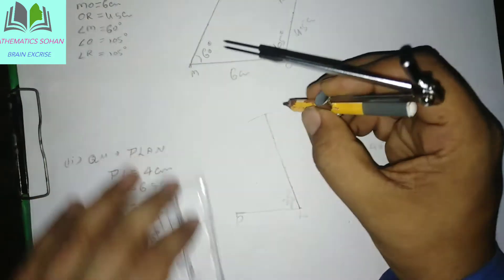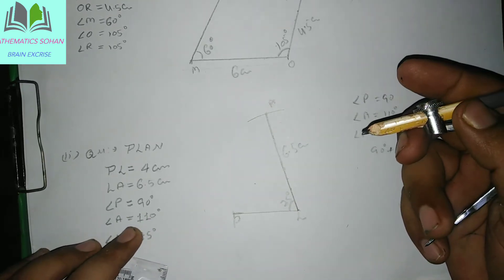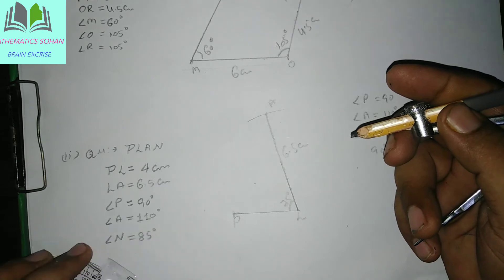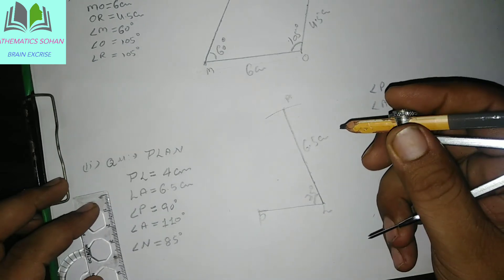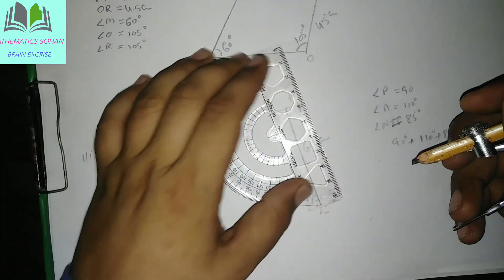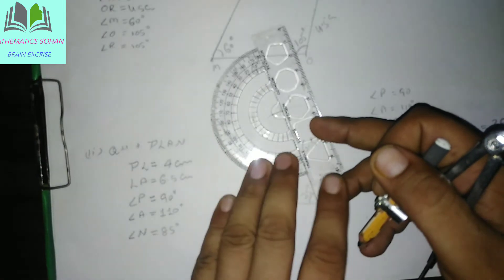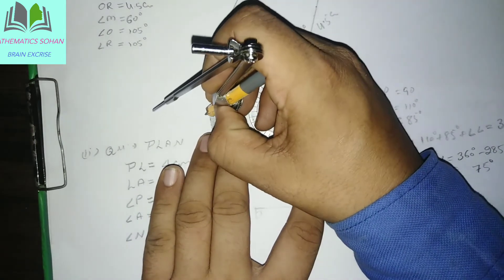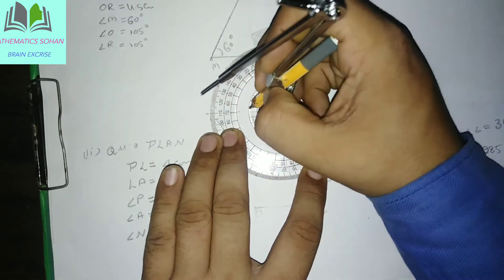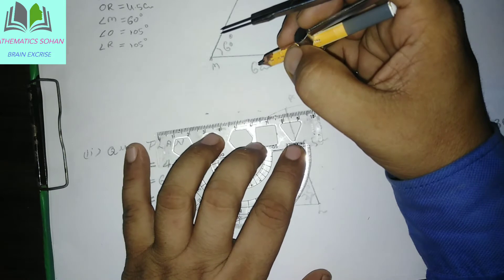Yahan par humne mil jayega A point. Yeh 6.5 cm ho jayega. Aap yahan par humein badhana hai 110 degree angle. Hum banate hain toh isi side se angle chalega toh hamar kahan par aa jayega — yeh angle aa jayega hamar 110 degree. Isko hum aage badha dete hain.